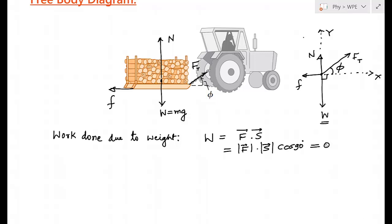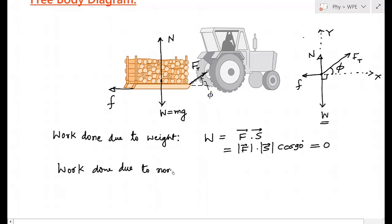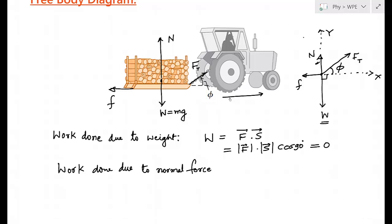Similarly, work done by the normal reaction is zero. The normal reaction acts in the y-direction while the sled moves in the x-direction, so the angle between the normal reaction and displacement is 90 degrees, giving zero work done.